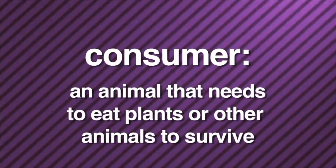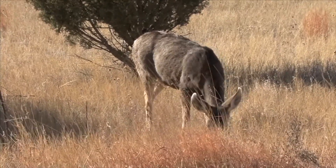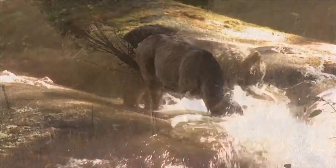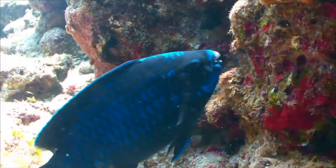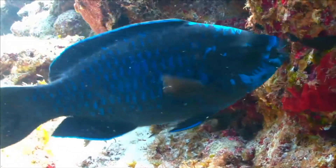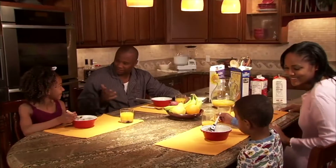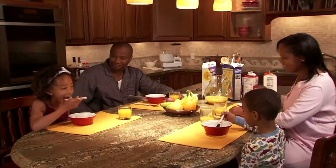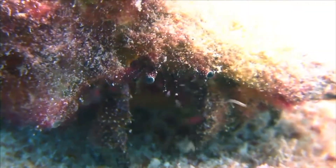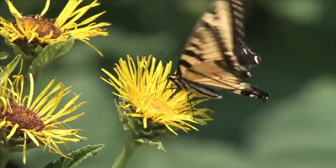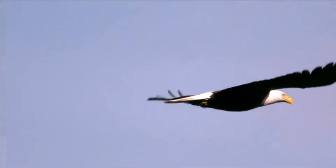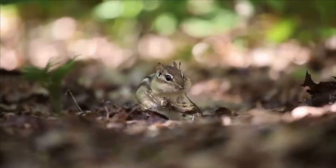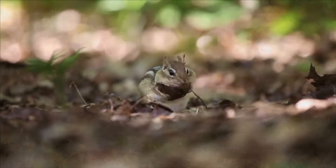A consumer is an animal that needs to eat plants or other animals to survive. Animals can't make their own food, so they need to consume or eat plants, animals, or both to get energy. Consumers cannot produce their own food. All animals are consumers. Like all living things, including animals and people, they need energy to live, grow, and change. All living things get energy from food. Animals use energy whenever they move, whether it's eating, running, or flying. To get energy, animals and people need to eat or consume plants or other animals.